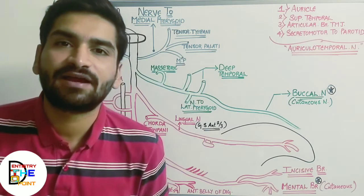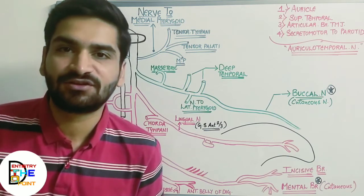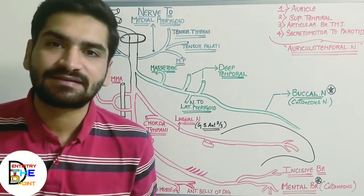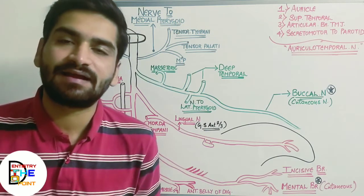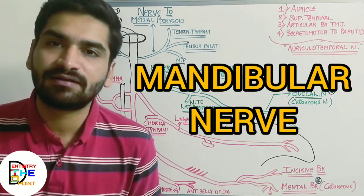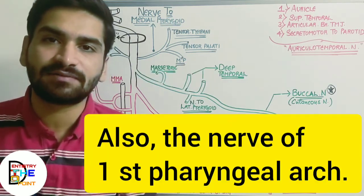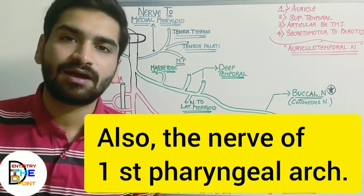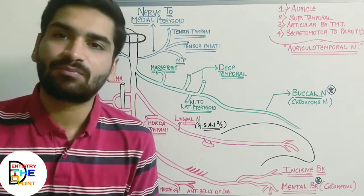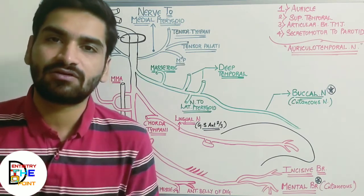Hi everyone, welcome back to our channel, Dentistry to the Point. This is Dr. Dhrumil Manik. In our previous video on general anatomy, we discussed the brachial plexus and its branches. Today we are going to discuss the mandibular nerve, which is the third division of the trigeminal nerve. I'm moving to the mandibular nerve directly because it is an important topic for the final examination.